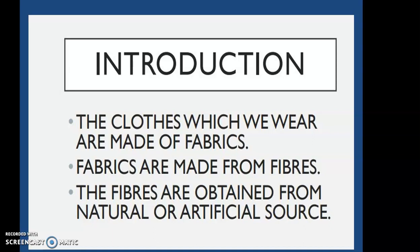We wear clothes made up of different types of fabrics. Fabrics are made from different types of fibers. Fibers are thread-like structures from which we can make fabric. A fiber should be strong and flexible so that it can be used to make good fabric. Fibers are obtained from natural sources as well as artificial sources.